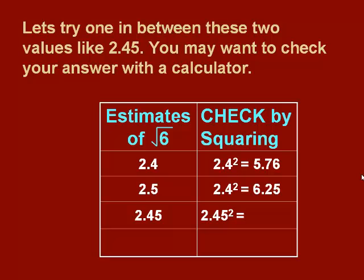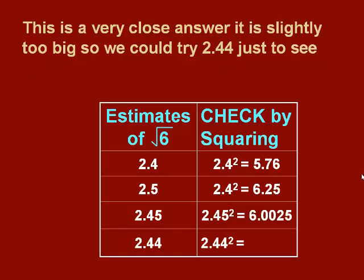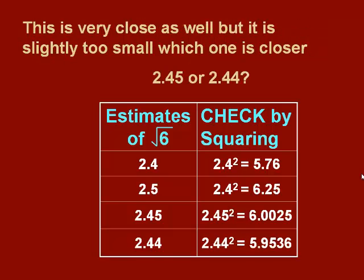So 2.45 would be an excellent number to start with. So let's square 2.45. This is a very close answer. Notice it's very close to 6, but it is slightly too big. So let's try one just below 2.45 and see what we get. So we'll square 2.44. And we come up with an answer that is also close, but is just slightly smaller.